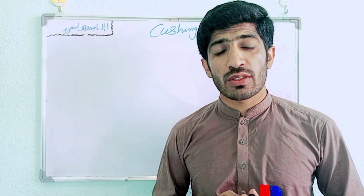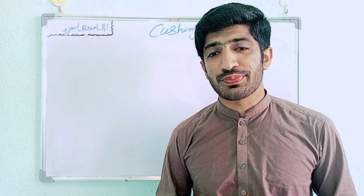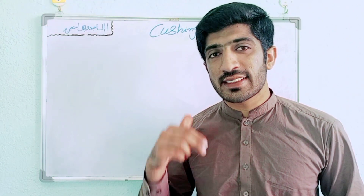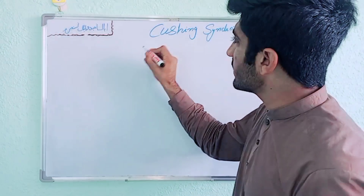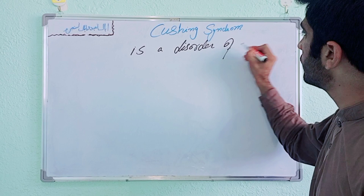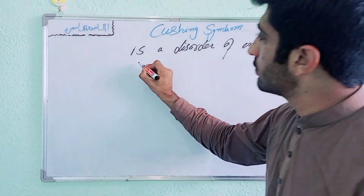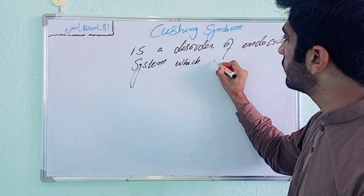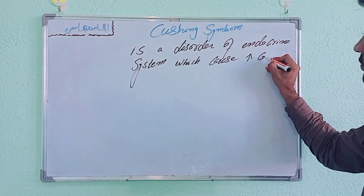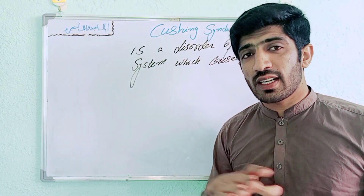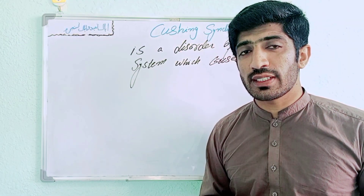Hello students, today we are going to talk about Cushing syndrome. This is a disease related to the endocrine system — a disorder of the endocrine system which causes an increase in the value of cortisol in the blood.